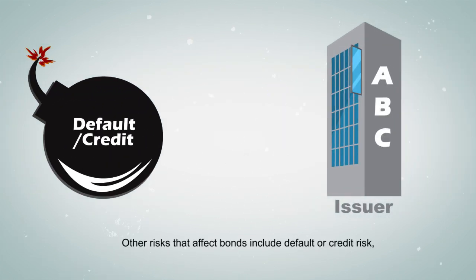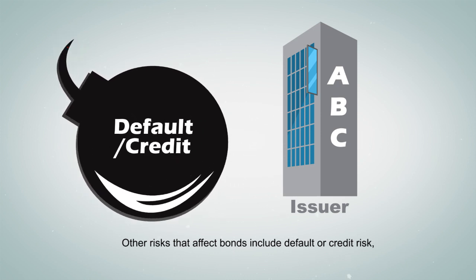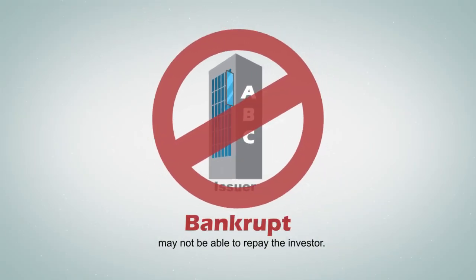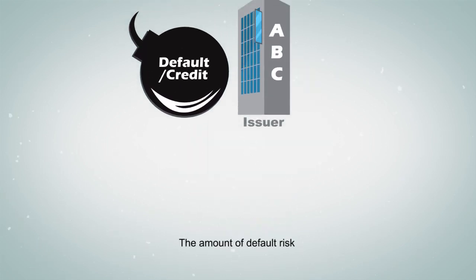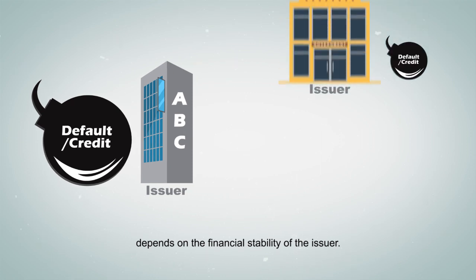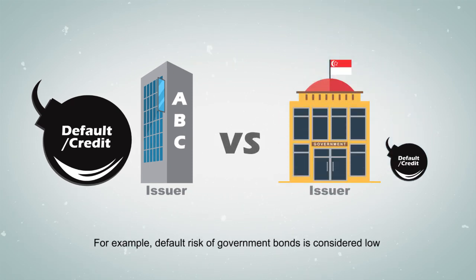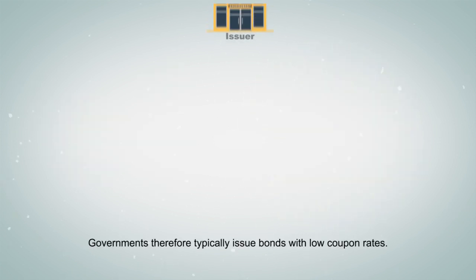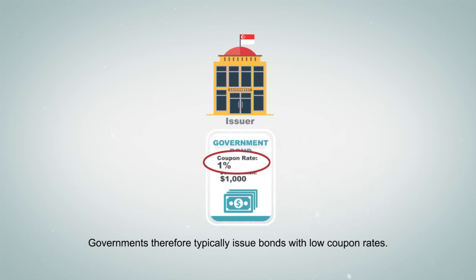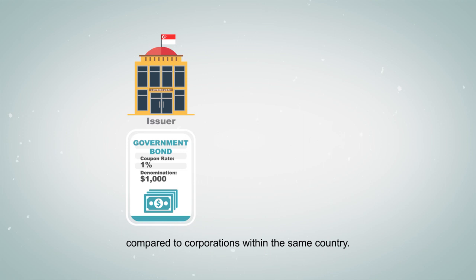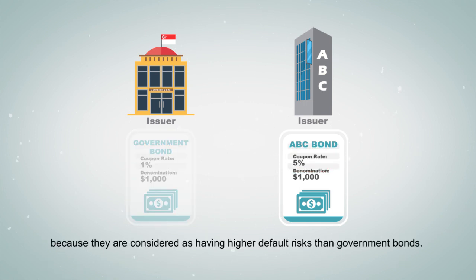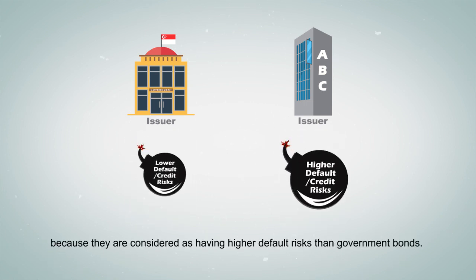Other risks that affect bonds include default or credit risk, which exists as there is a possibility that the issuer may not be able to repay the investor. The amount of default risk depends on the financial stability of the issuer. For example, default risk of government bonds is considered low because most governments are regarded as financially stable. Governments therefore typically issue bonds with low coupon rates compared to corporations within the same country. Corporations issue bonds with higher coupon rates because they are considered as having higher default risks than government bonds.